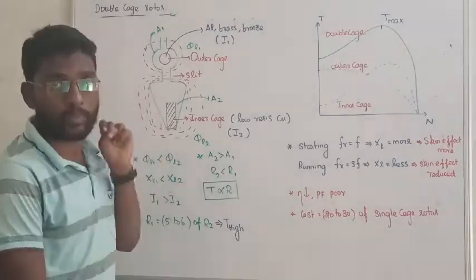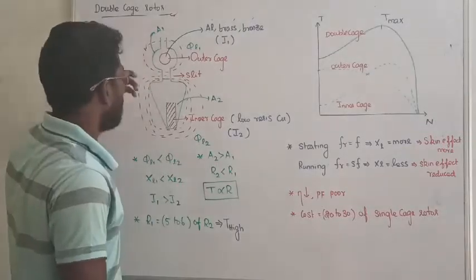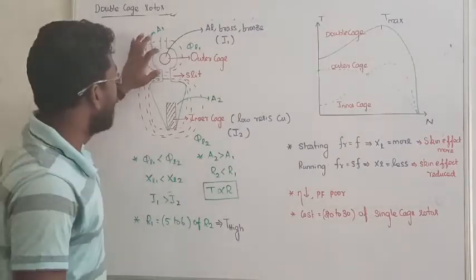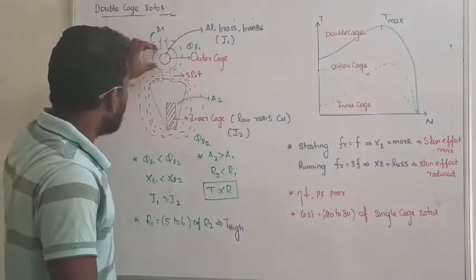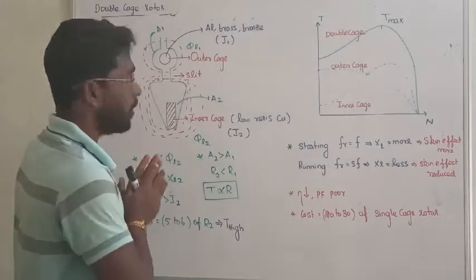So here we have two separate cages, one is called outer cage, another one is called inner cage. So what is the difference? In this outer cage, the area is very less. Outer cage area, inner cage area, that is very simple operation.